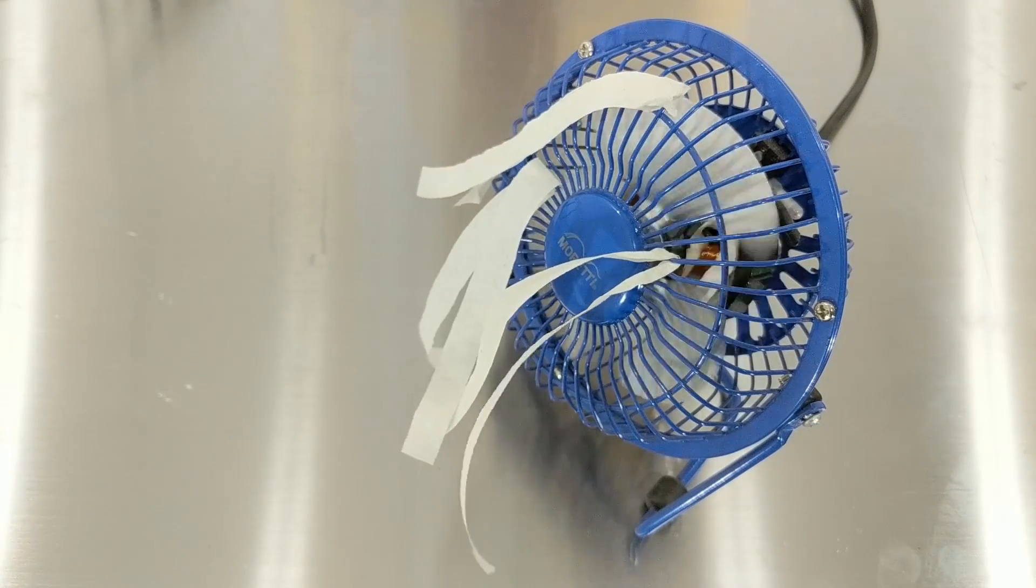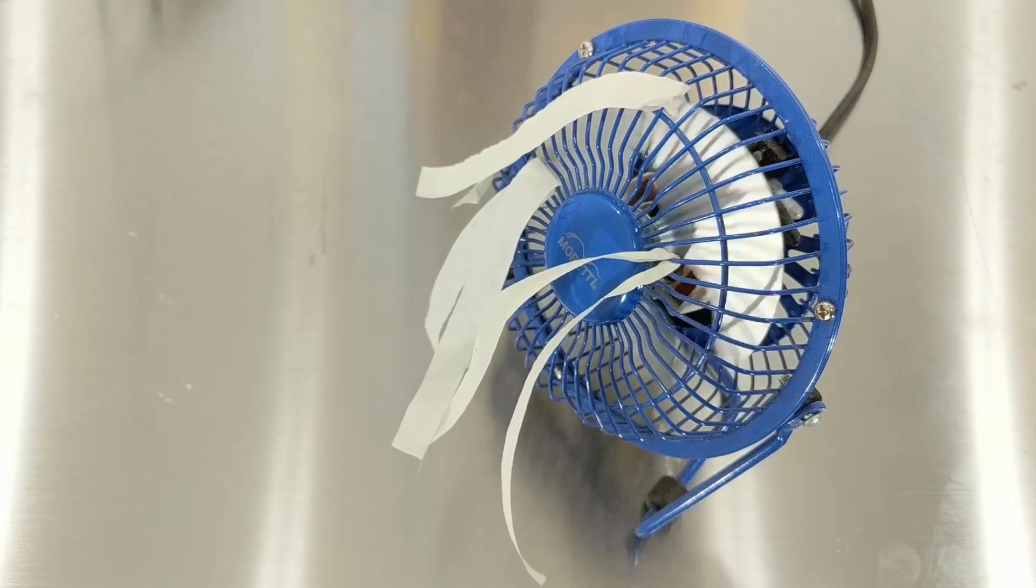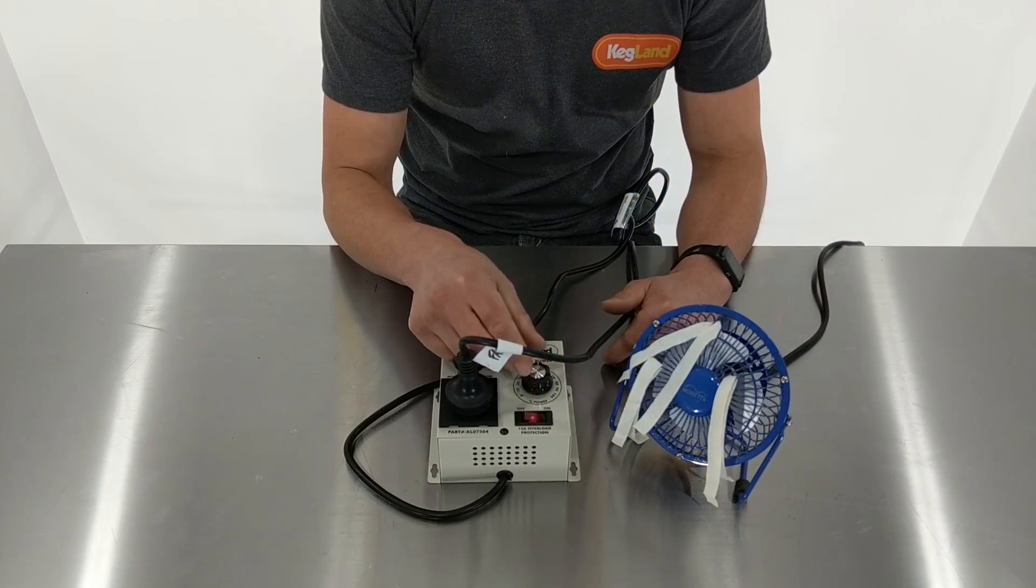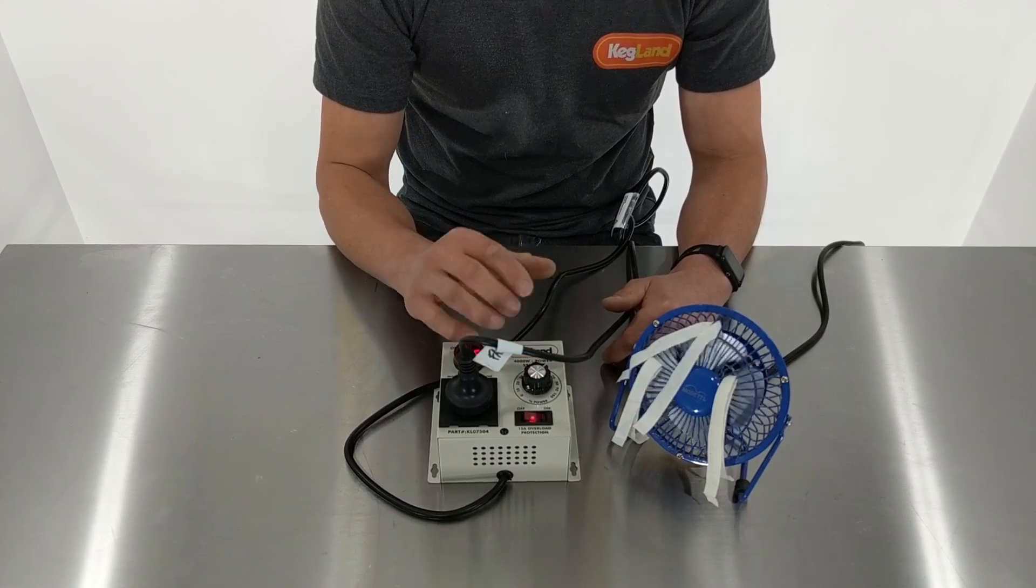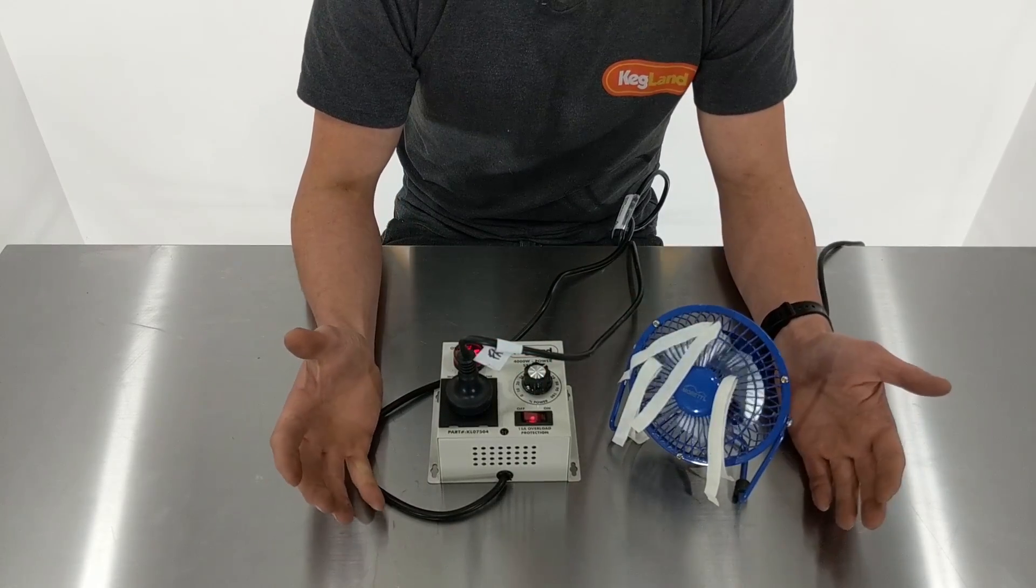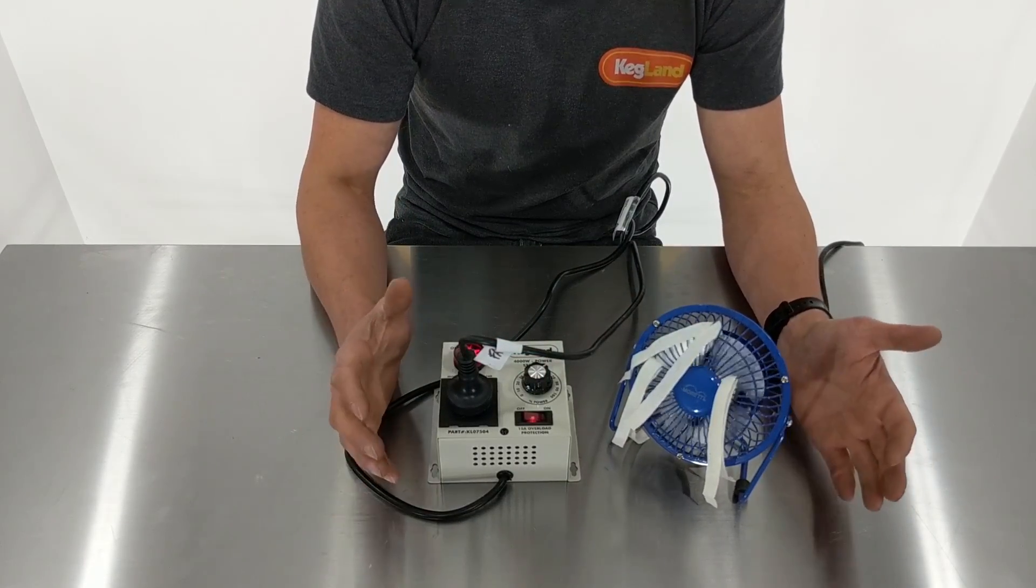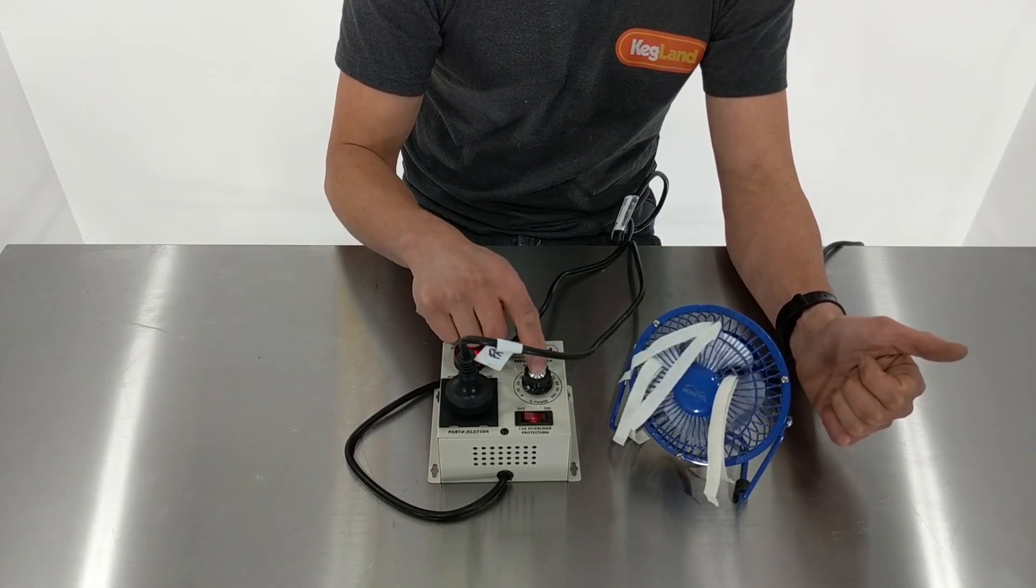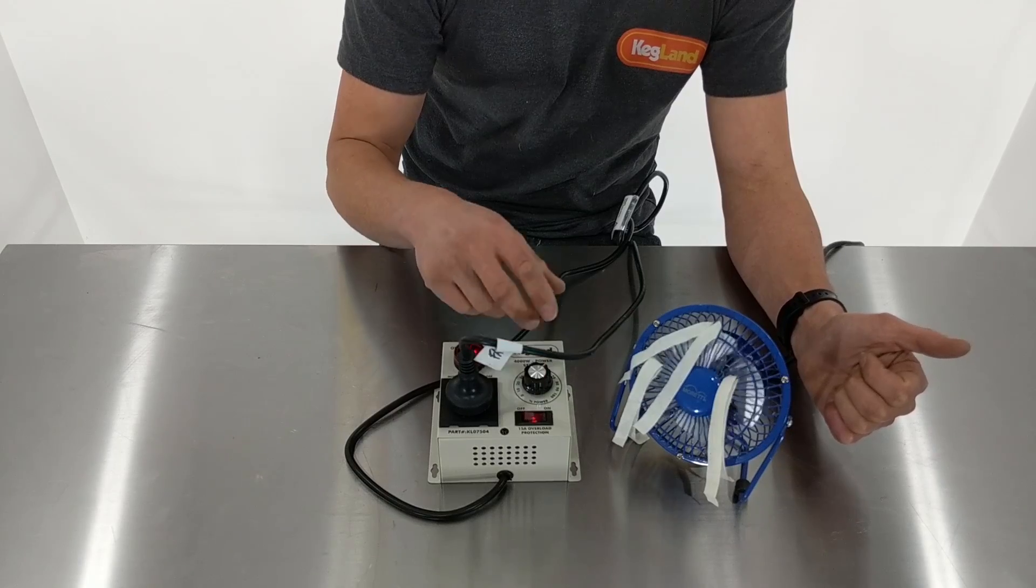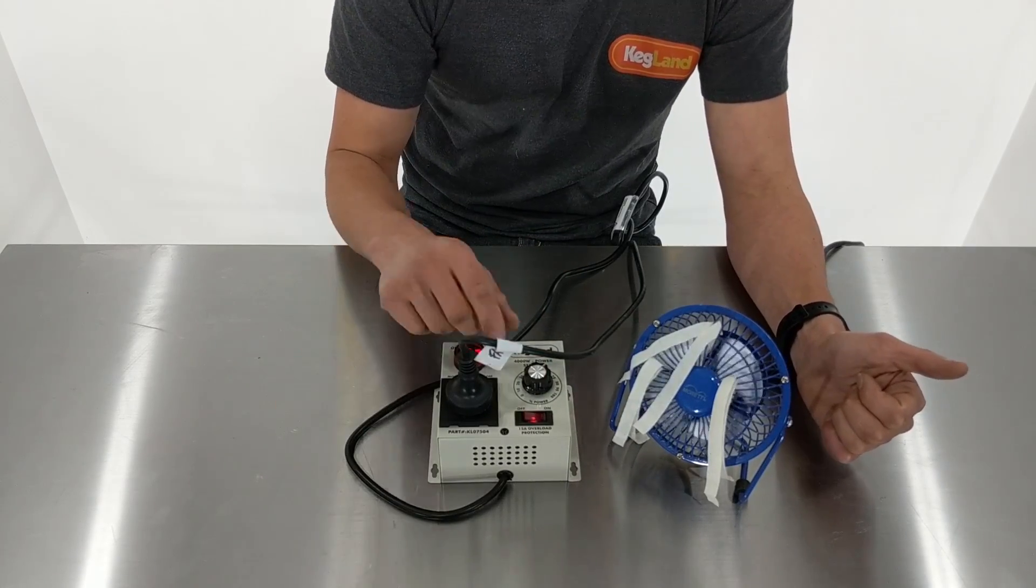Now one thing you don't want to do with motors is go too slow. So I wouldn't want to go right down here and just stall it because eventually that can cook the fan. So you always want to make sure with motors - if you're going to use this for a grain mill for instance, which might be a really handy application if you want to adjust the grain milling speed - always make sure on the controller you're using a minimum speed to actually get the motor turning. That's obviously a really important part.